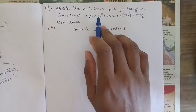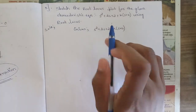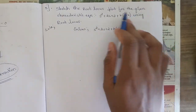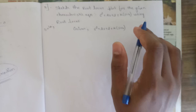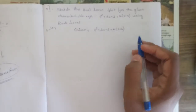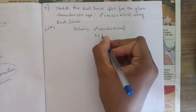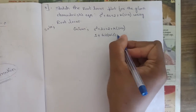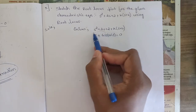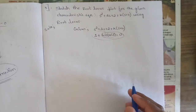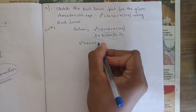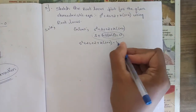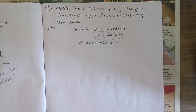The question is: sketch the root locus plot for the given characteristic equation. In this case they have not given any transfer function, they have given one equation. That equation we need to convert into a general transfer function form in order to find G(s)H(s). The characteristic equation given is: s² + 2s + 2 + K(s + 4) = 0.